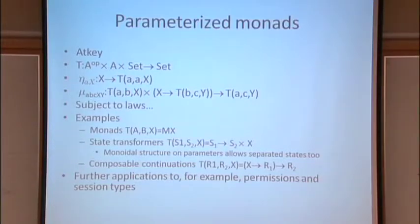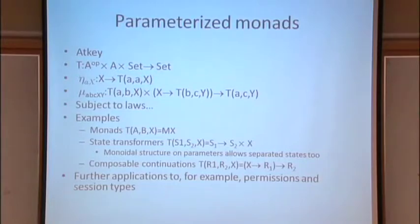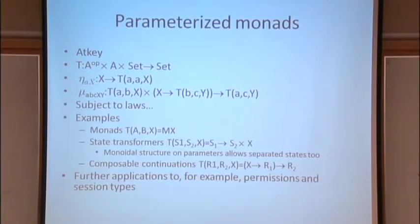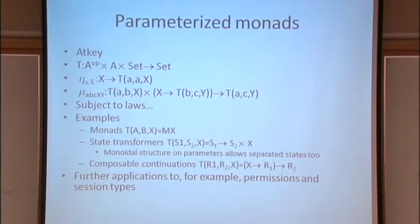The second example of parameterized monads is composable continuations. The normal continuations monad has a single return type, where T of x is x to R to R. Here we allow both an input and an output return type, giving continuations corresponding to delimited blocks that can be plugged together: T of R1, R2 of x is x to R1 to R2. If you've ever been baffled by delimited continuations, Bob Atkey's paper on parameterized monads gives a dramatically clearer explanation than operationally-minded accounts. This notion that computations take you forward in time will come up again in later slides.